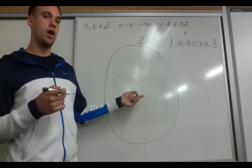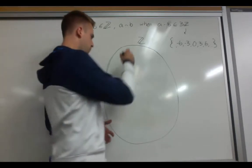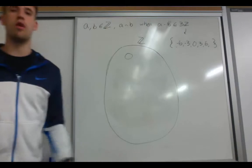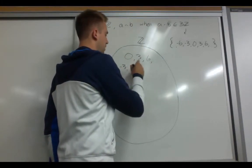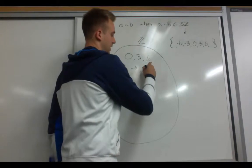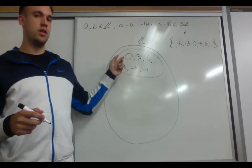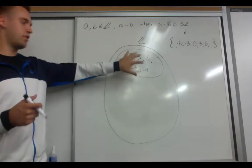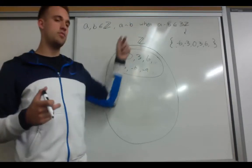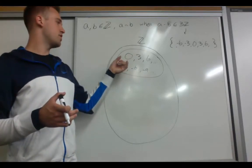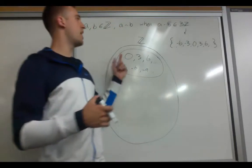Now we want to create our different equivalence classes based on this equivalence relation. The first equivalence class contains the integer 0. Other integers in this class include 3, 6, negative 3, negative 6, negative 9, and so on to infinity in each direction. This equivalence class is the same as our set 3Z. Within this class, if we choose any two integers for A and B and compute A minus B, we always end up in the set 3Z — for example, 3 minus 0 gives 3, and 6 minus negative 3 gives positive 9.